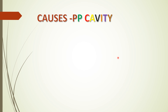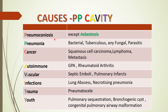I have made the mnemonic 'PP CAVITY' for the causes of cavitary lung diseases: Pneumoconiosis (all except asbestosis), Pneumonia (bacterial, tuberculous, fungal, and parasitic), Cancer (squamous cell carcinoma, lymphoma, metastasis), Autoimmune (granulomatosis with polyangiitis, rheumatoid arthritis, Wegener's granulomatosis), Vascular (septic emboli, pulmonary infarct), Infections (lung abscess, necrotizing pneumonia), Trauma, and Youth — meaning congenital conditions like pulmonary sequestration, bronchogenic cyst, and congenital pulmonary airway malformation.